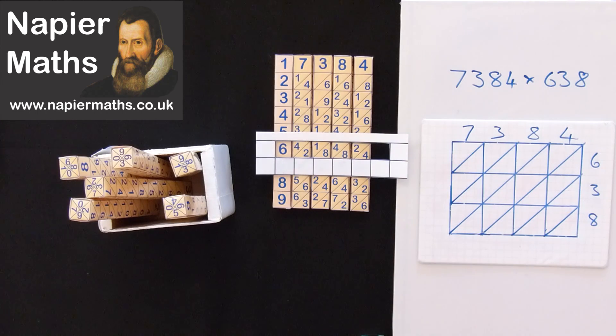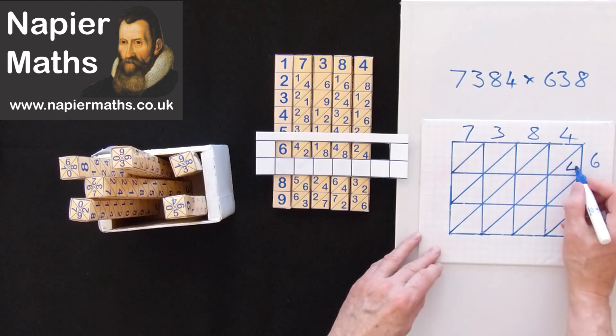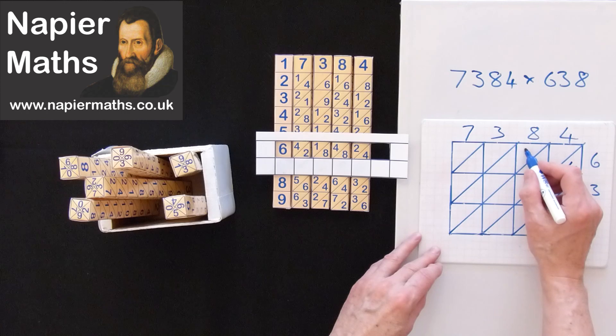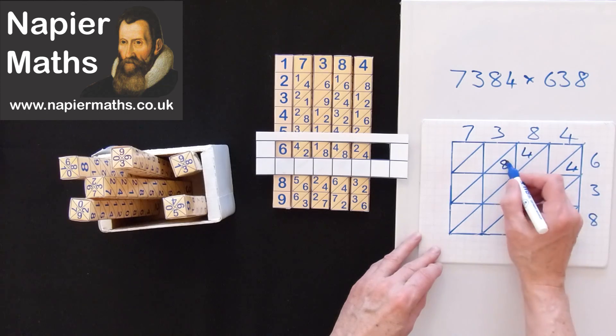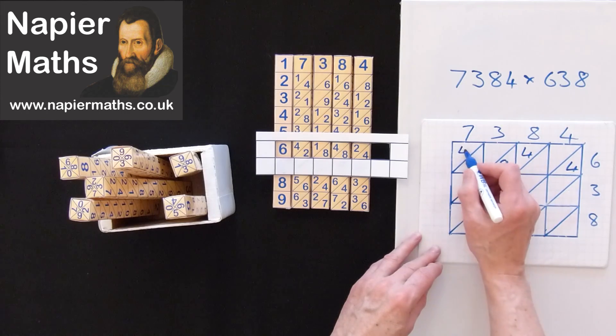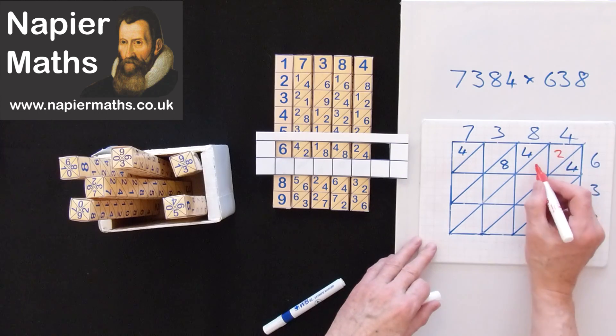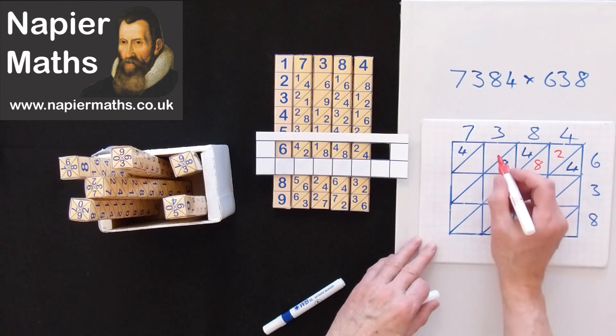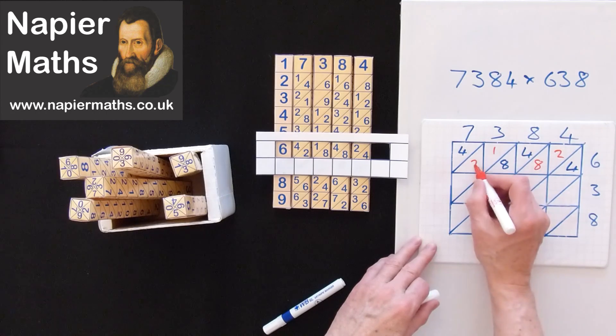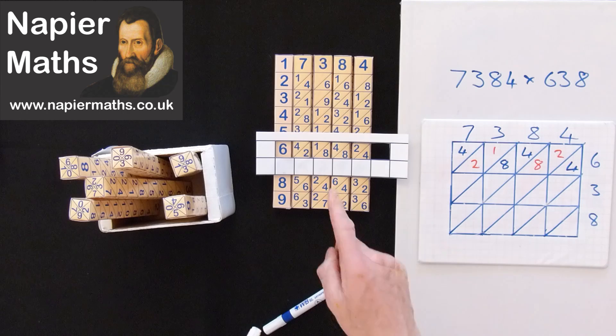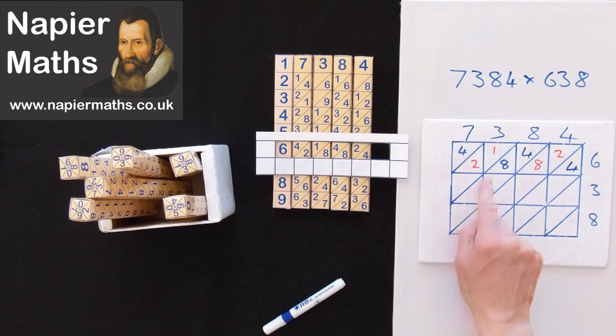And again, like I did the last time, to make it easier, I'm going to put it in two different colours. We'll make that 4. That one there's 4 and 8. And that one there's 4. Put the red in for the other ones. Again, you don't do this. This is just so I can show you the addition easily. And that's that line. 4, 2, 1, 8, 4, 8, 2, 4.